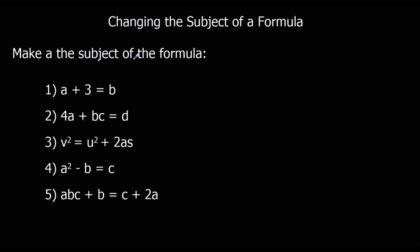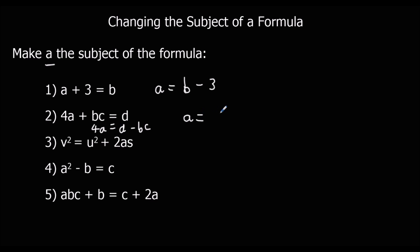Here are some questions for you to try — pause the video and give them a go. For the first one, we want to make A the subject. I need to get rid of this plus 3, so I'm going to minus 3 from both sides, giving A equals B minus 3. For the second one, I'm going to get rid of the BC first by subtracting BC from both sides, leaving 4A equals D minus BC. Then I divide by 4 to get A by itself, so A equals D minus BC over 4.